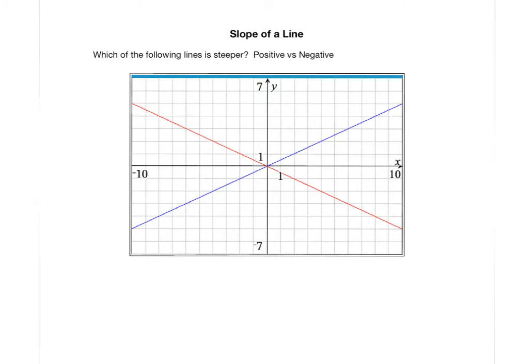whenever a line is increasing from left to right, so the blue line here is what we would call an increasing line. Whenever a line is increasing, we consider the slope to be positive.